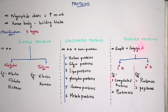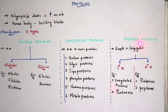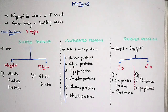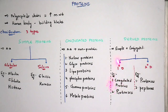Derived proteins consist of both simple and conjugated proteins. They are classified into two types: primary derived proteins and secondary derived proteins. The best examples for primary derived proteins are coagulated proteins and proteases. For secondary derived proteins, proteases and peptones are the best examples.